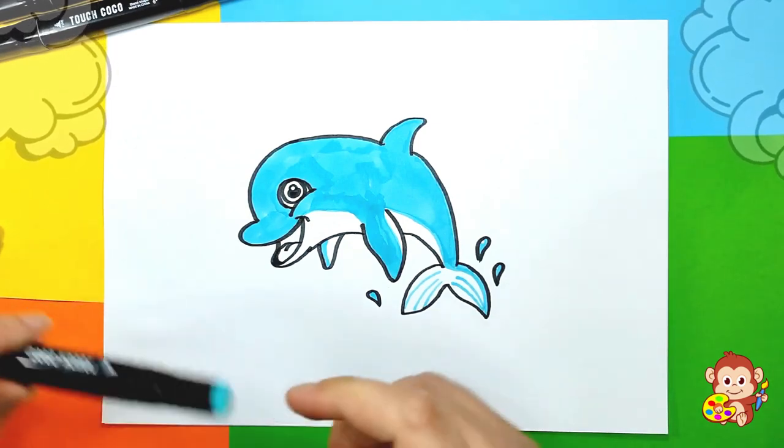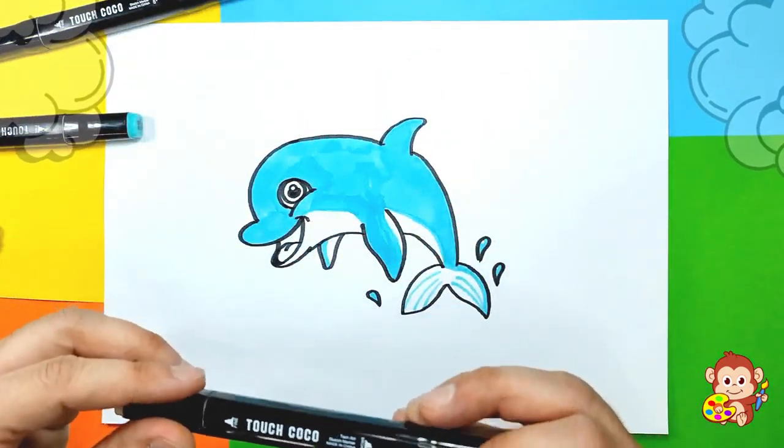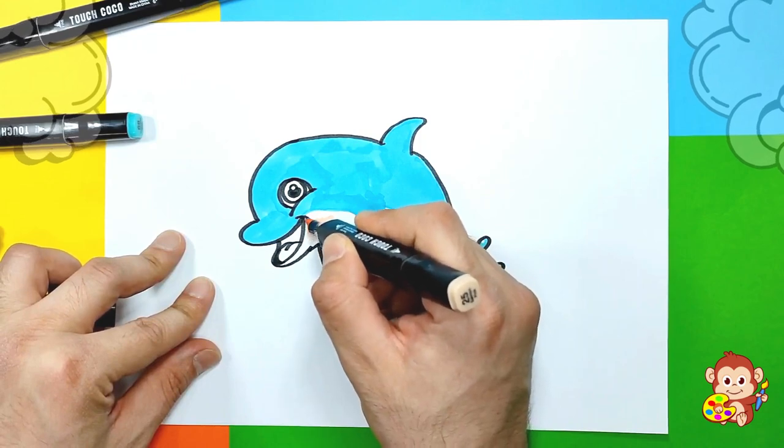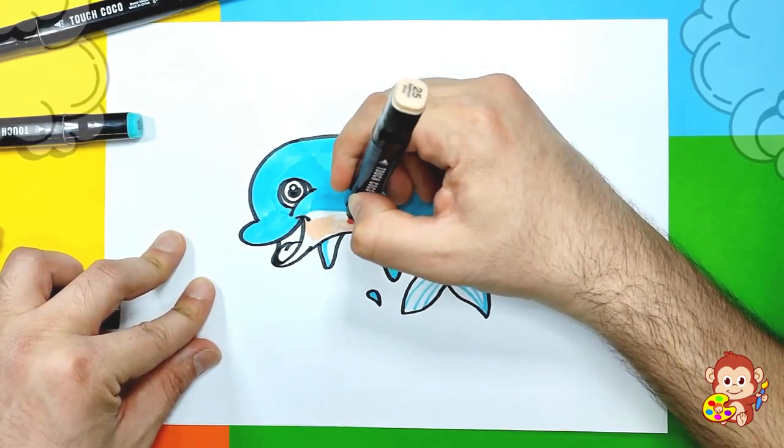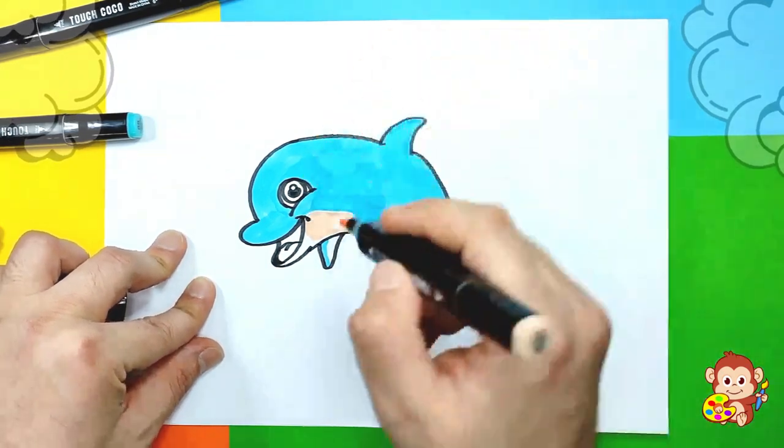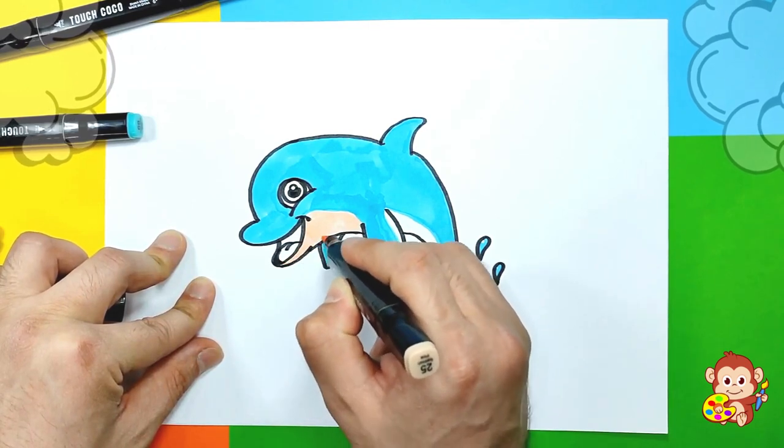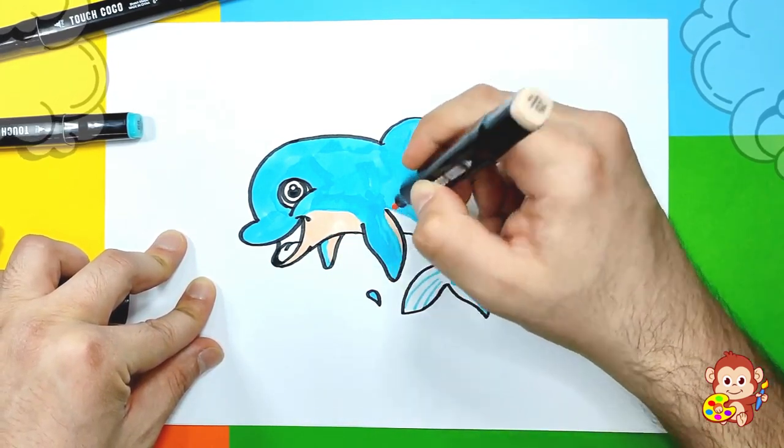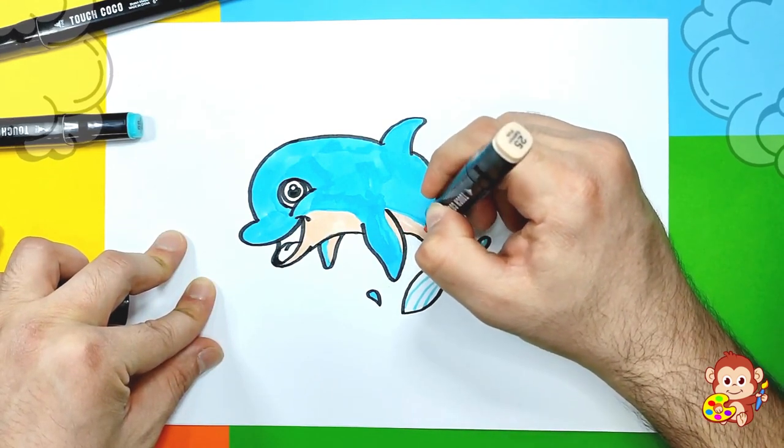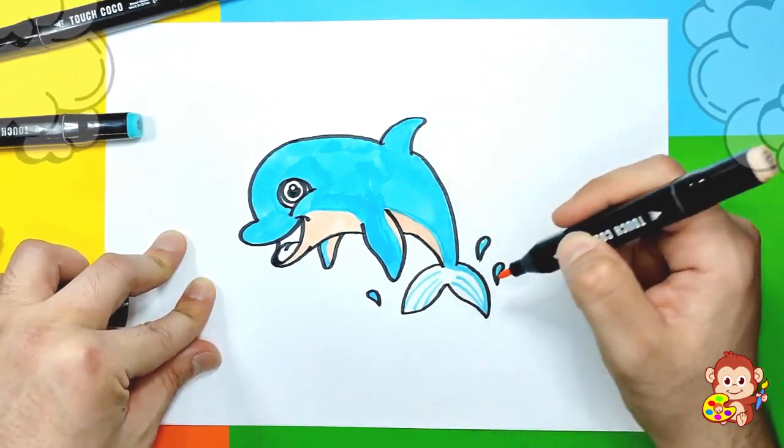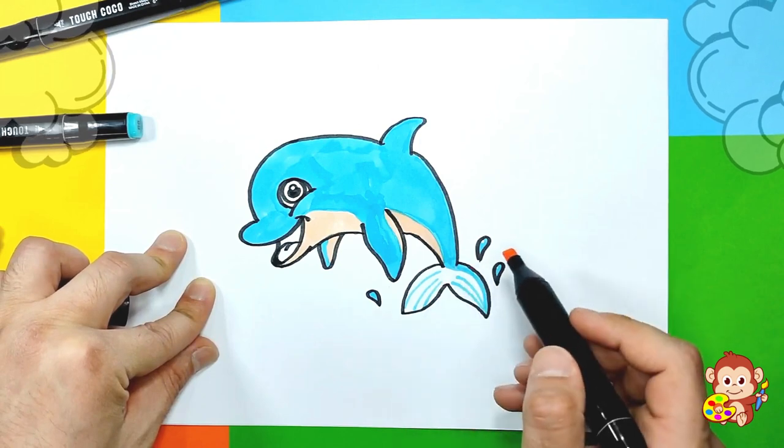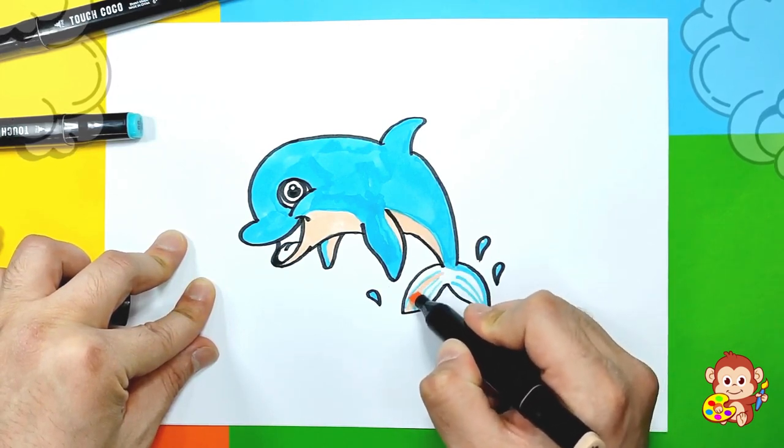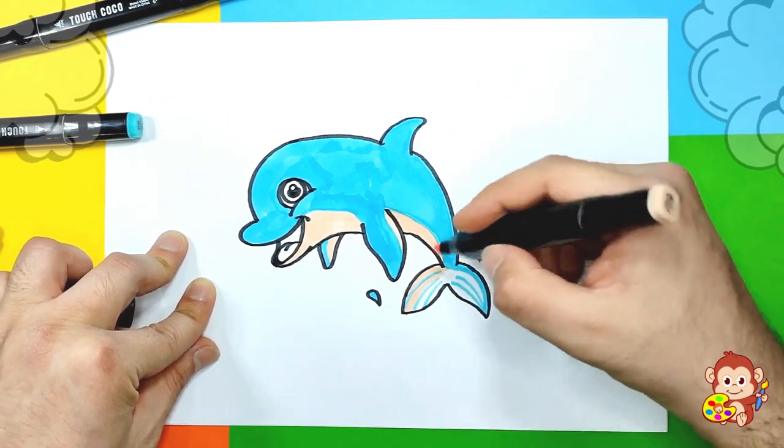Now we're gonna use this skin color and color the bottom parts. Maybe we can leave this part white. It's looking cool. Oh no, I'm gonna actually color this as well, but you can leave it if you want.